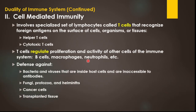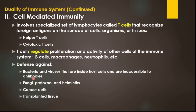The second type is cell-mediated immunity. It involves a specialized set of lymphocytes called T-cells that recognize antigens on the surface of cells, organisms, and tissues. There are two basic types: helper T-cells and cytotoxic T-cells. T-cells regulate the proliferation and activity of other immune system cells — B-cells, macrophages, and neutrophils. Cell-mediated immunity provides defense against bacteria and viruses that are inside host cells and inaccessible to antibodies, as well as against protozoa, cancer cells, and transplanted tissues.